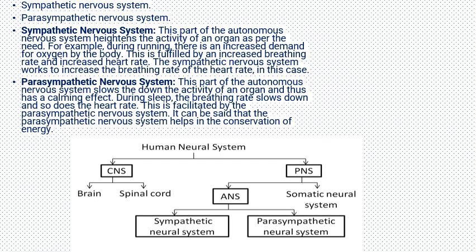To summarize, the human nervous system is divided into the central nervous system, which contains the brain and spinal cord, and the peripheral nervous system, which includes the somatic neural system. The autonomous nervous system is divided into the parasympathetic and sympathetic nervous systems. Please try to understand the concepts well, as it will be useful when writing exam answers.